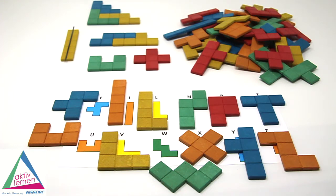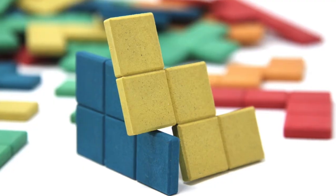The name pentomino is composed of the Greek prefix for the number five and the suffix omino. Pentominos are also called square fives.